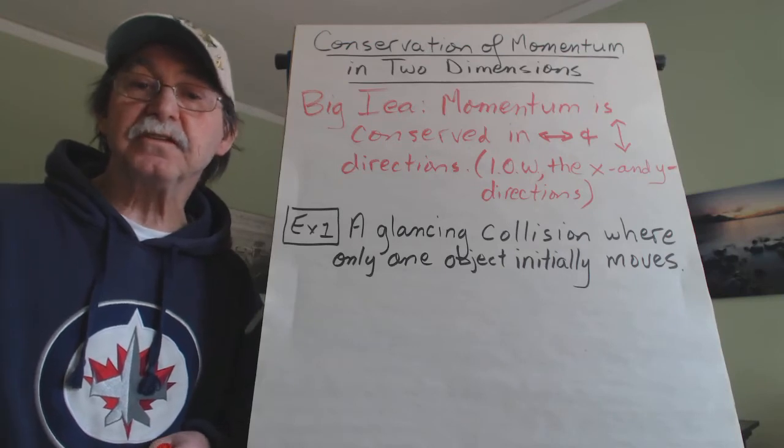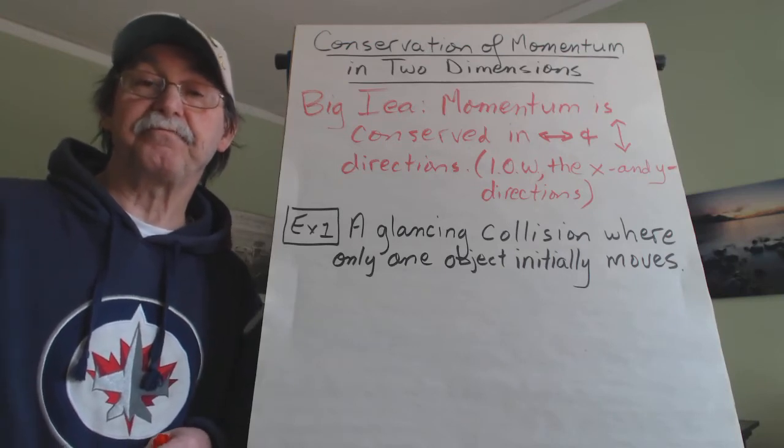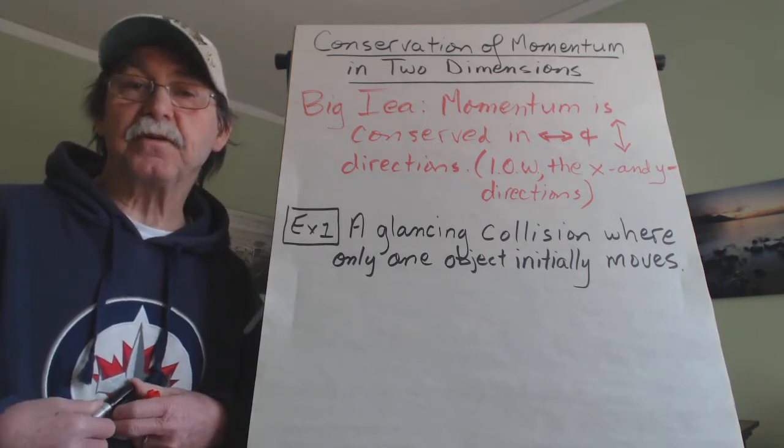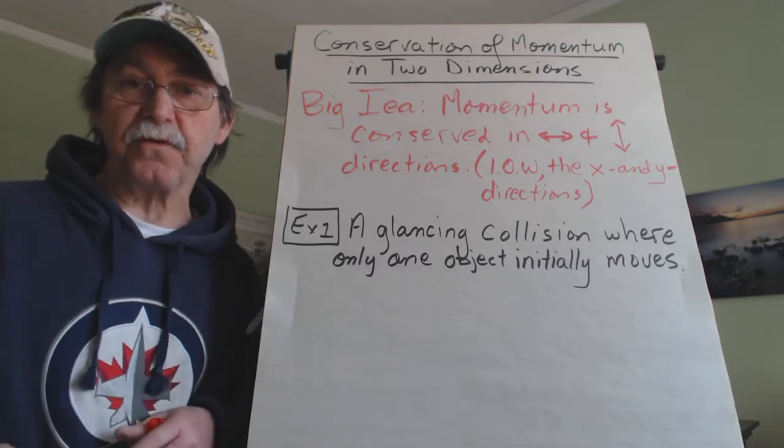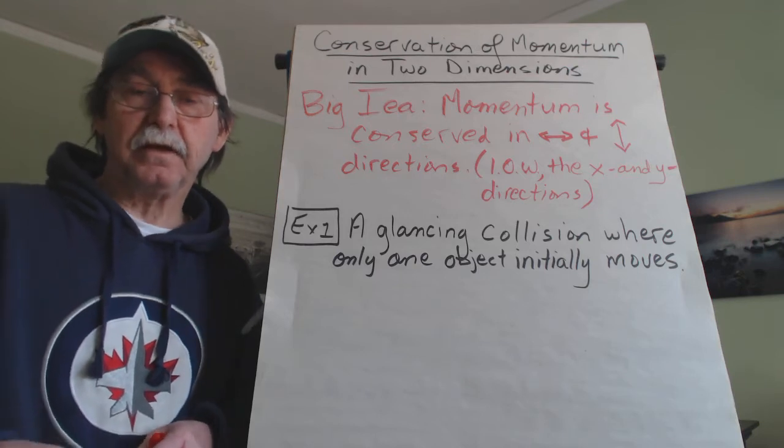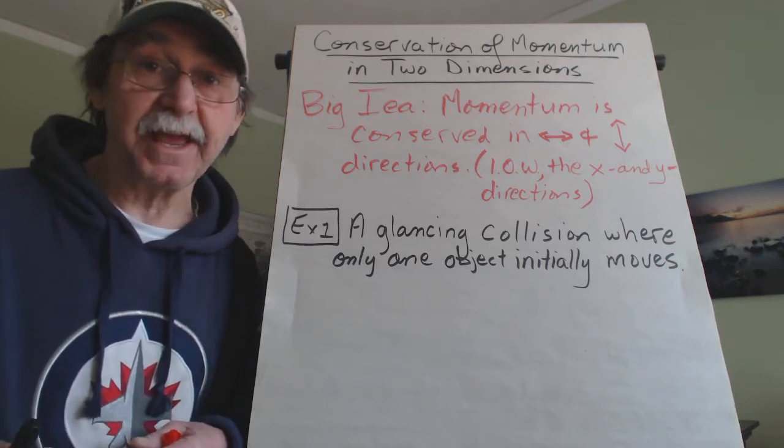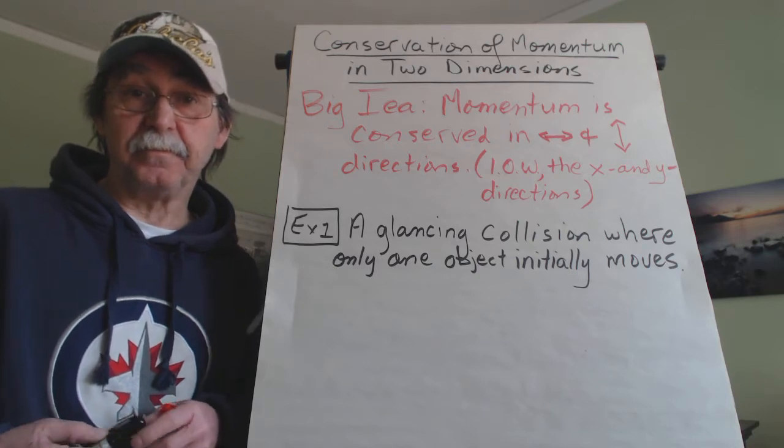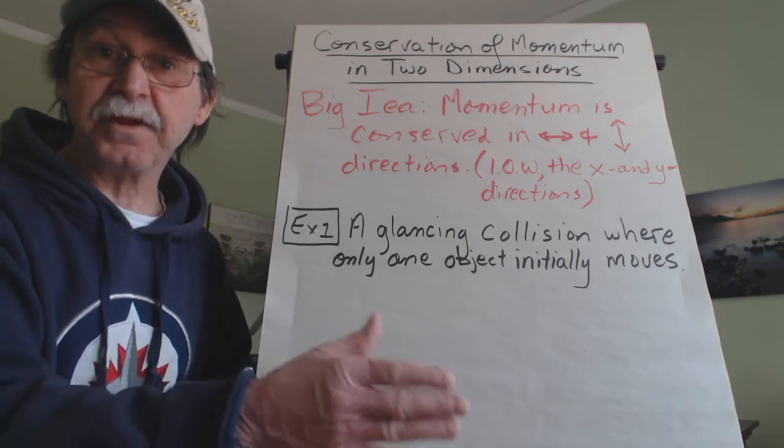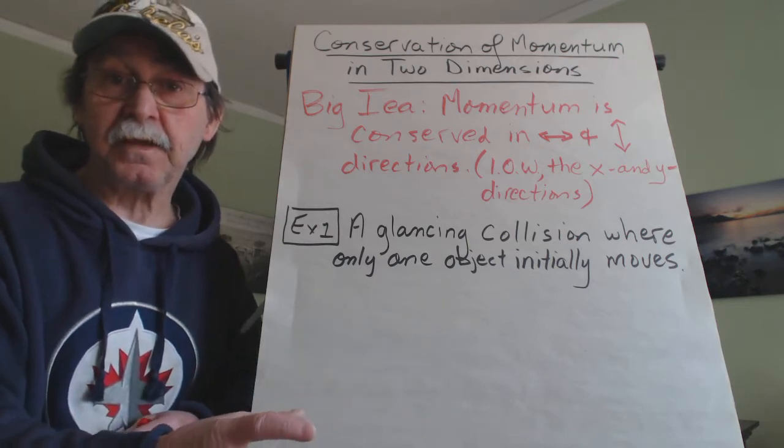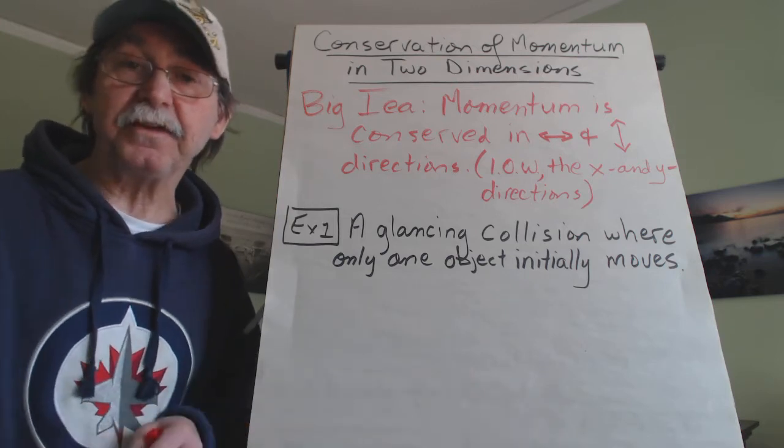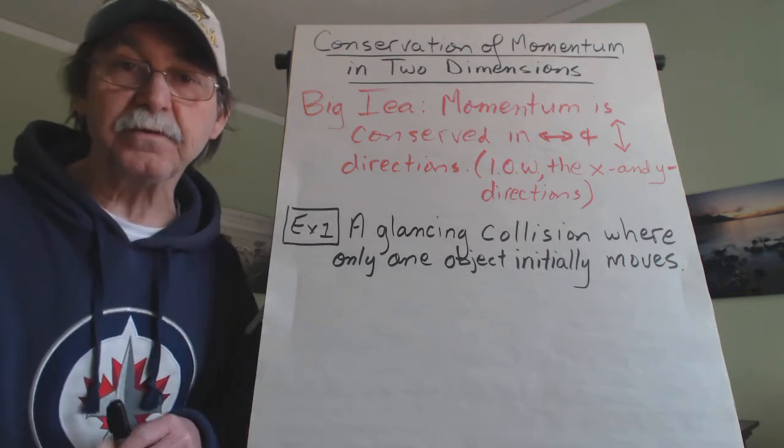We're talking about the conservation of momentum. And we have, just to refresh your memory, we have talked about one dimension so far. In other words, two cars colliding head-on, two billiard balls colliding head-on. What else can I say? Oh yeah, somebody running off a dock, jumping into a boat, in the stationary boat. And the person, they carry on in a straight line. All the things that could be related to that sort of stuff. That is one dimension.